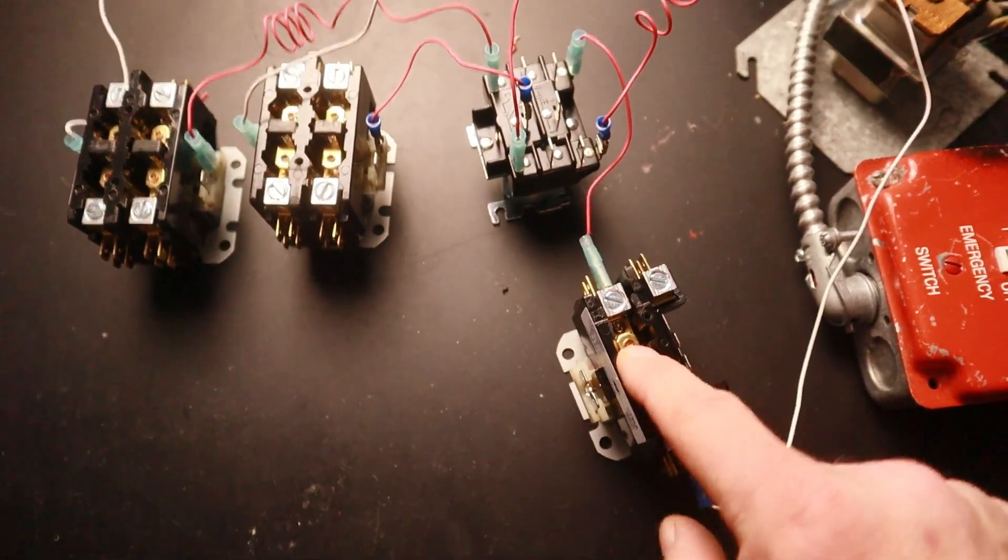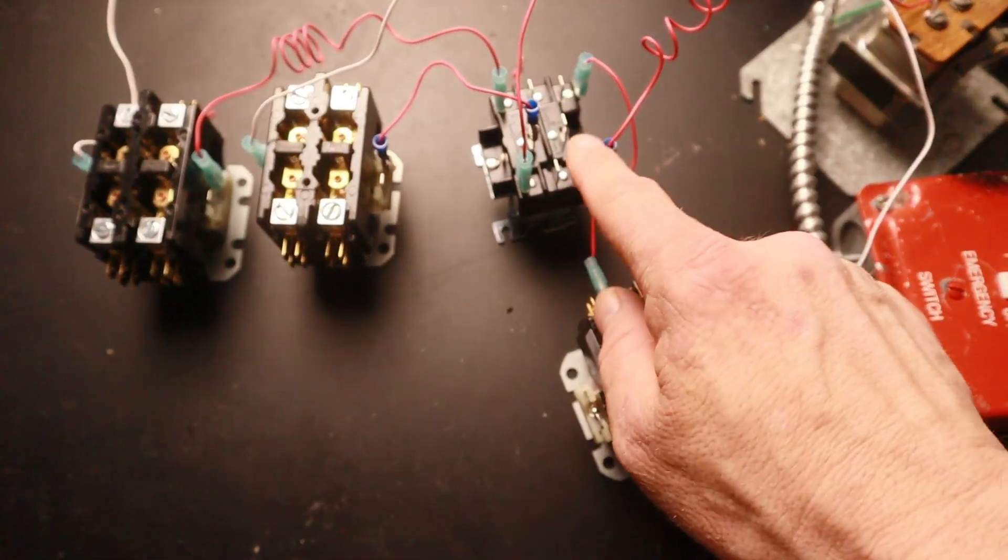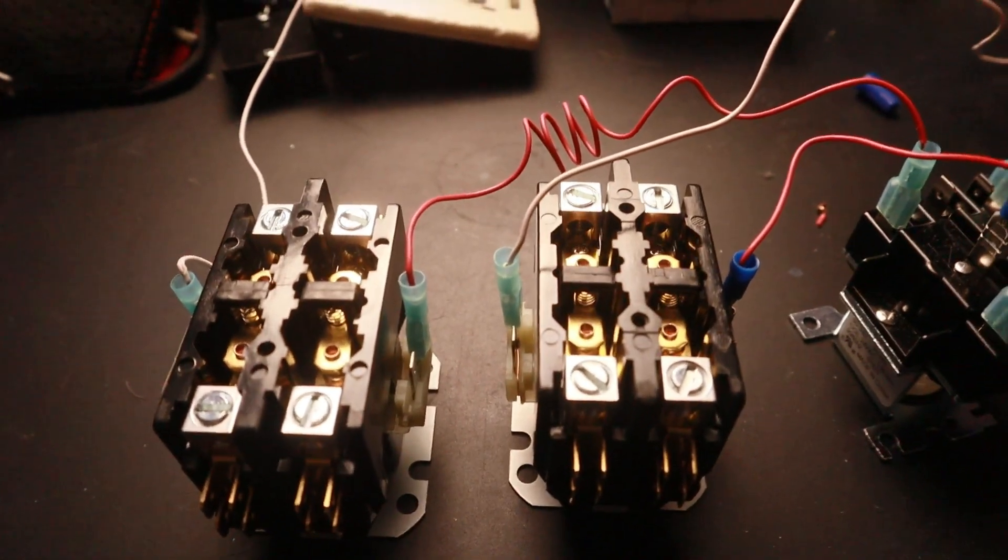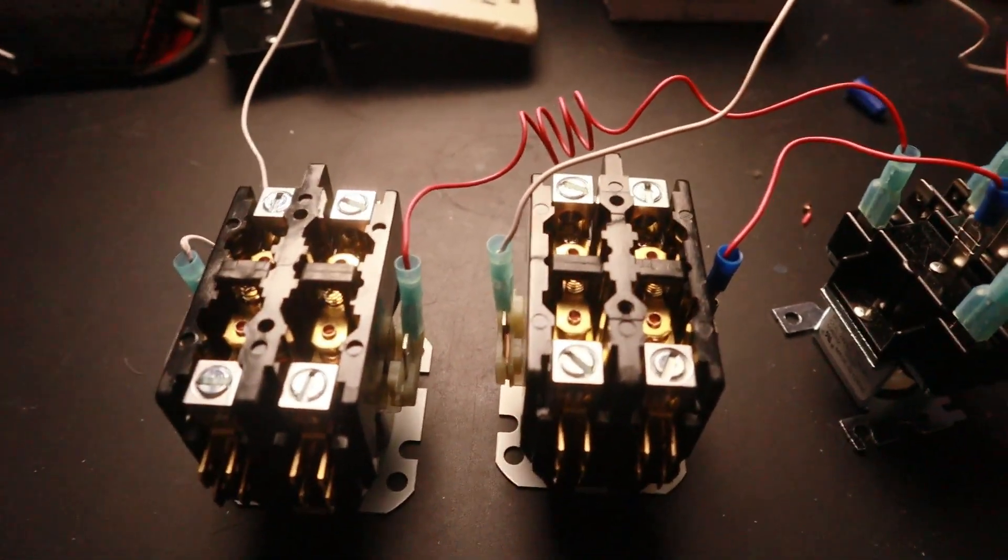This plunger here, this switch, is controlling power to the coil in this relay. I'm going to turn the power on. Let's watch these plungers. Now you can see the one on the right pulled in.